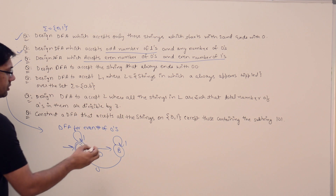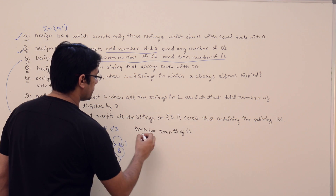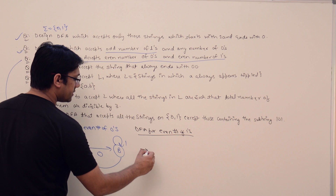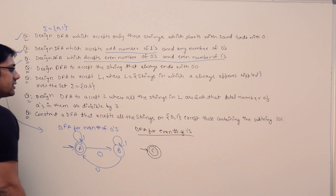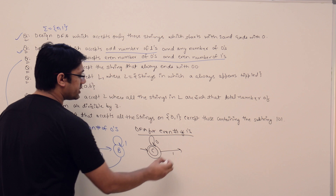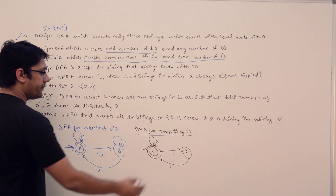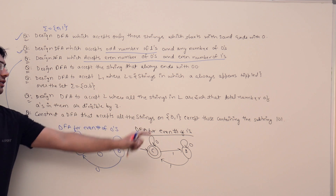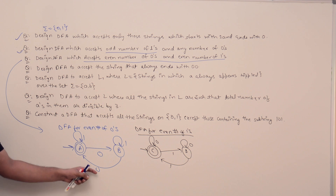We can also make a DFA for even number of ones. We make an initial and final state C since the number of ones starts even. As soon as we get a 1 we transition to state D since ones become odd. One more 1 returns ones to even. Any number of zeros are ignored — we only count ones.